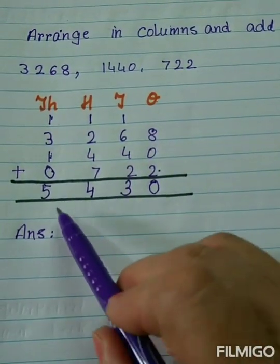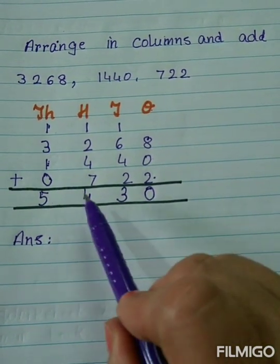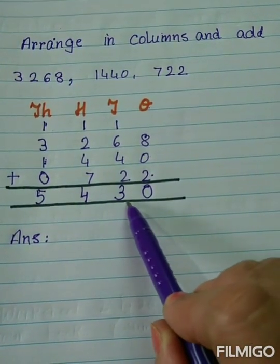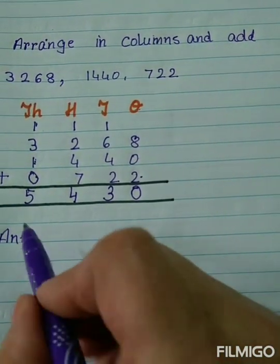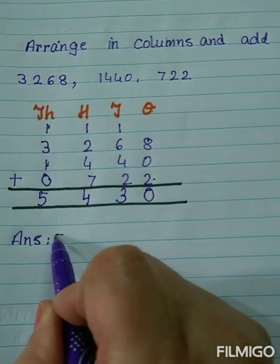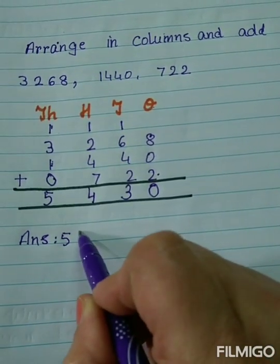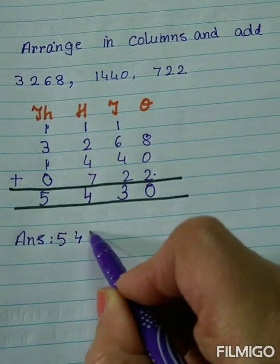So here we have the answer. 5,400, 3 tens and 0 ones. So let's write the answer below. 5,430.